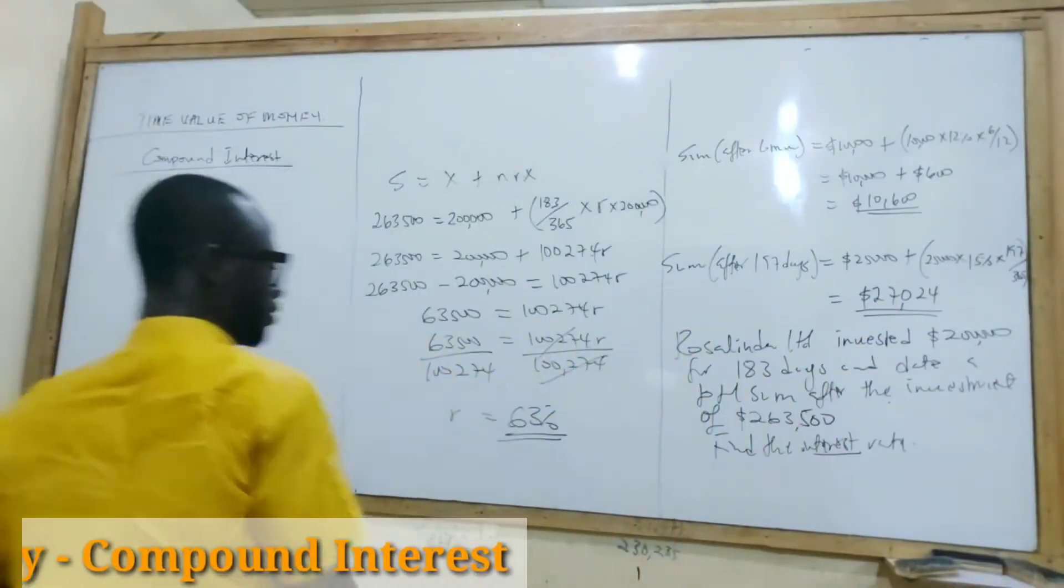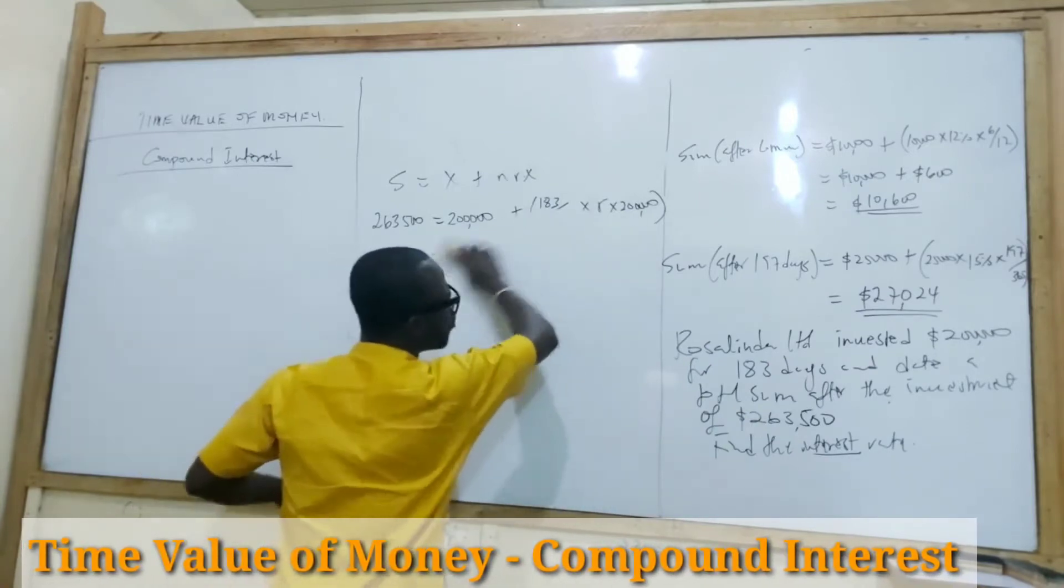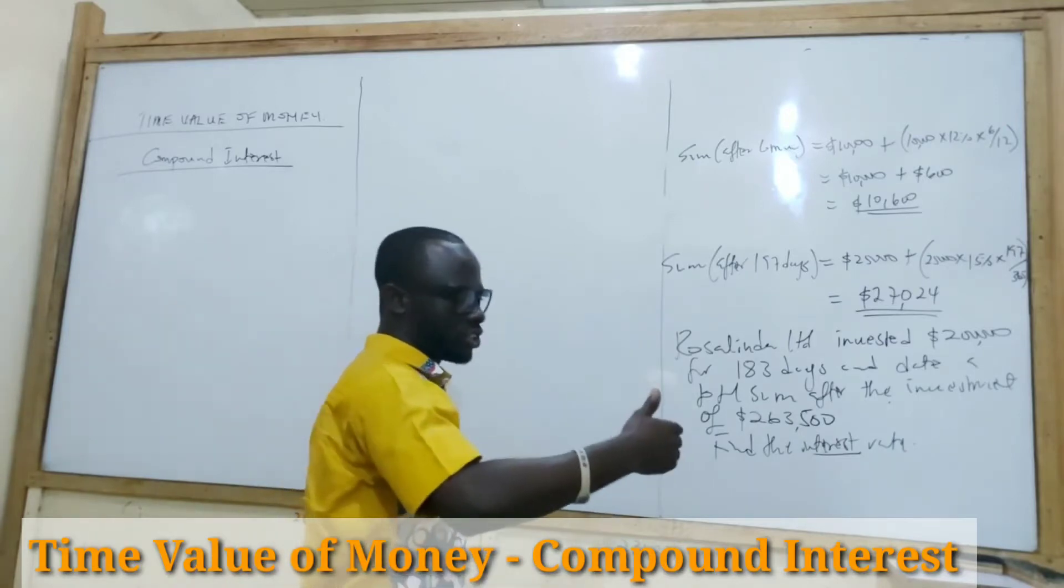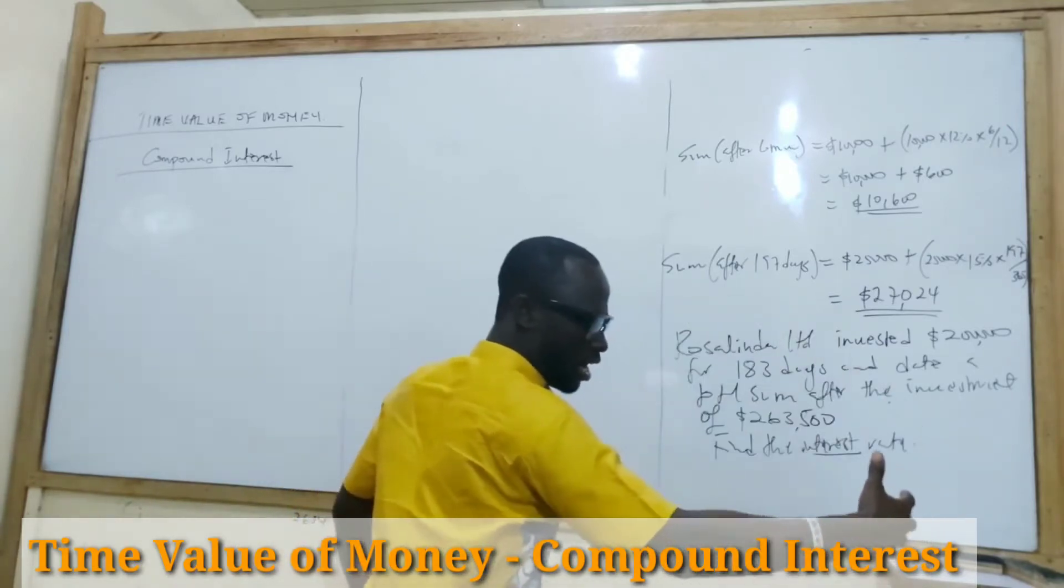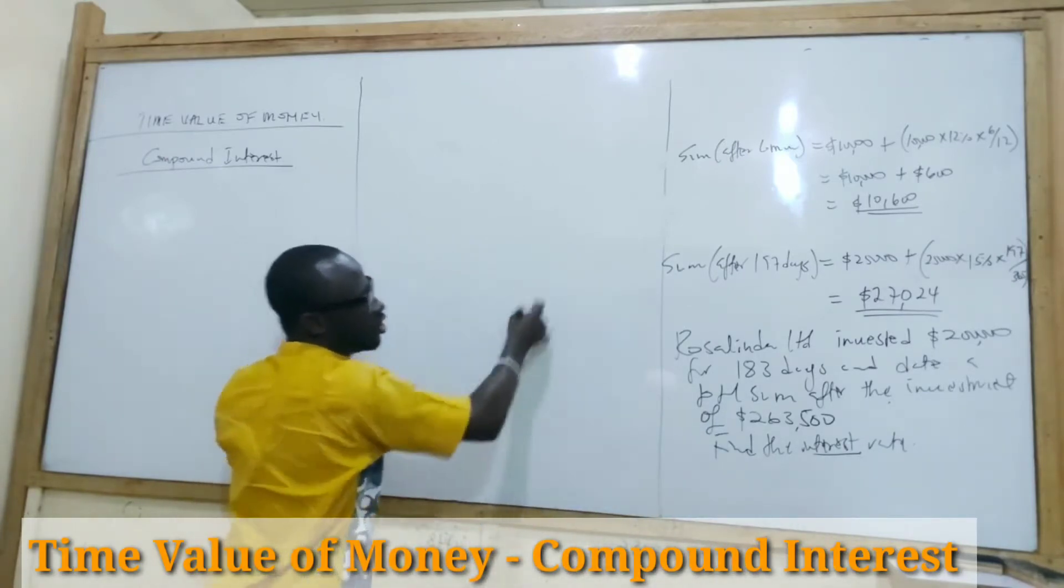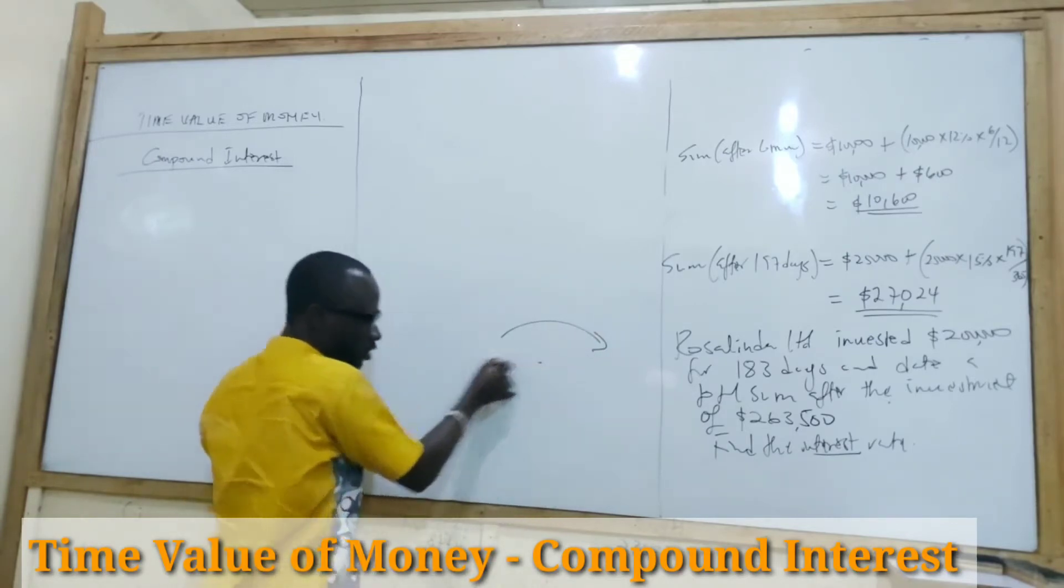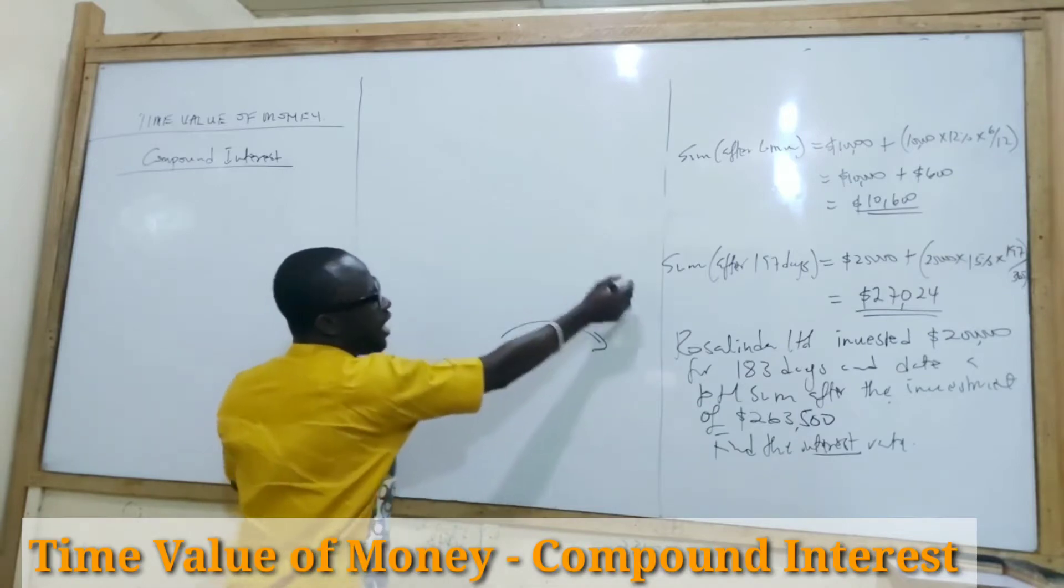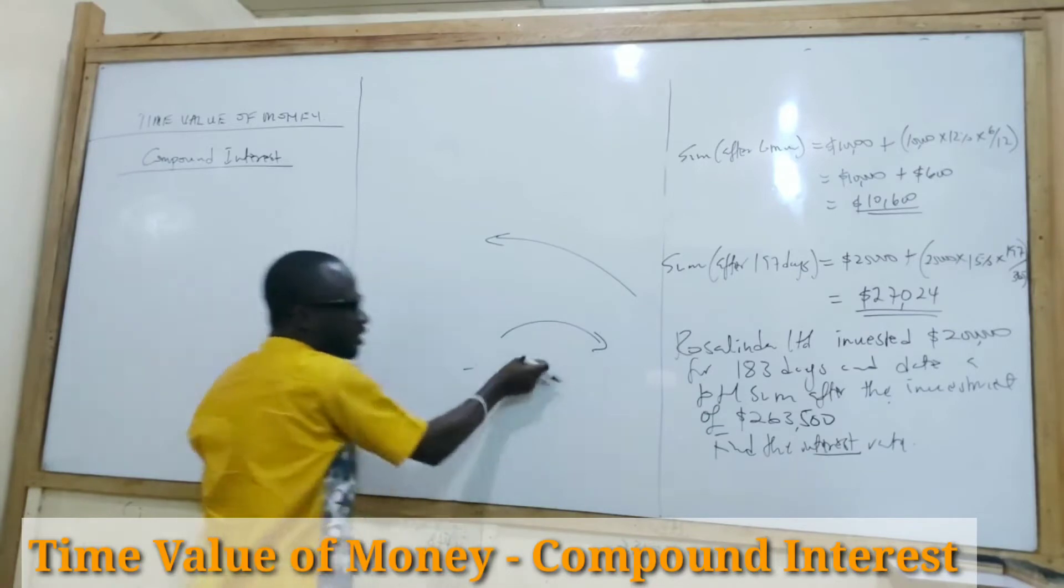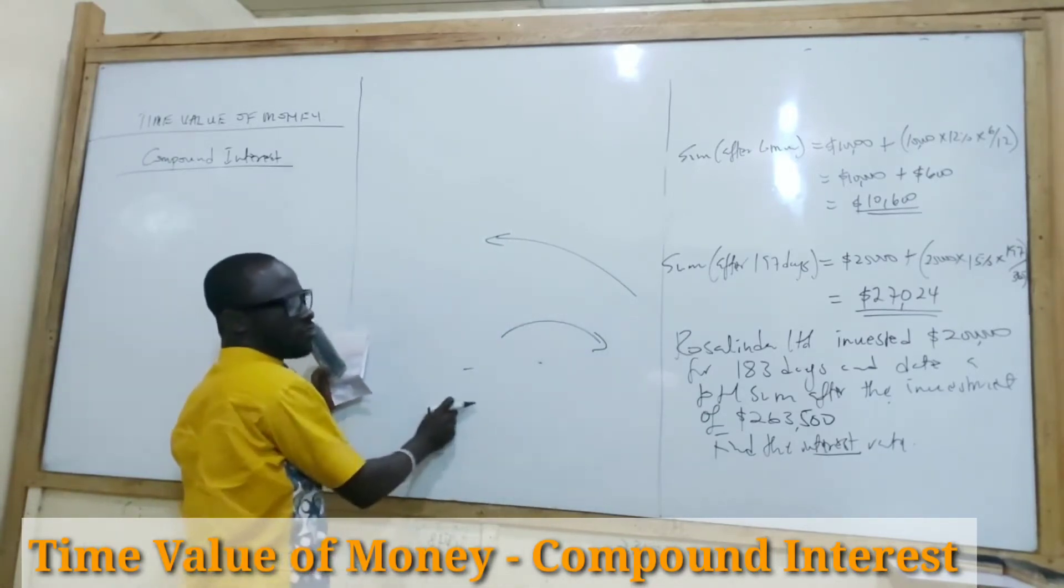Compound Interest. Now, as I mentioned earlier, compound interest is where the interest is charged on the principal plus the interest. In other words, for every period, what happens is that the next interest will be charged on the principal plus what? The interest. Unlike simple interest where the interest is always charged on the principal, with compound interest, the interest is added to the original figure, added to the original figure, added to the original figure.